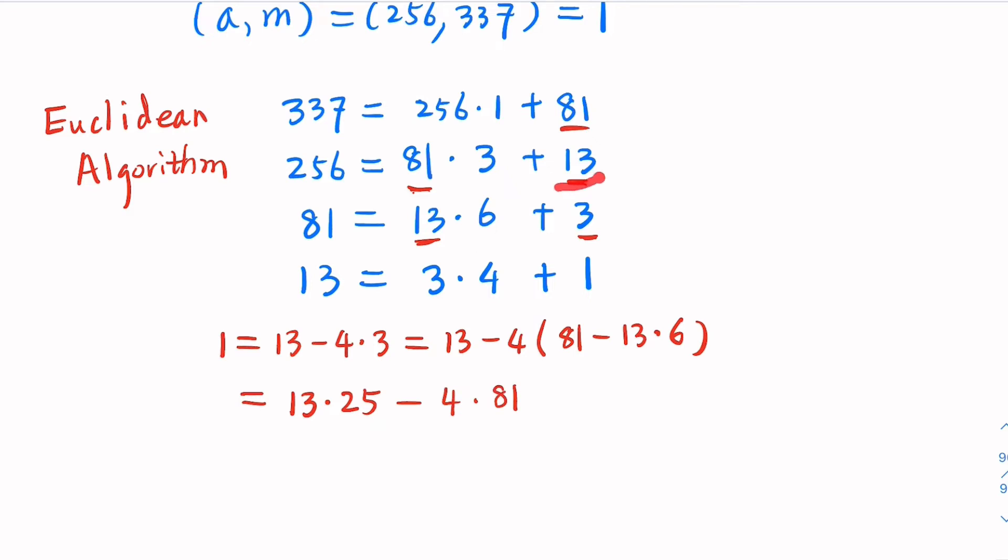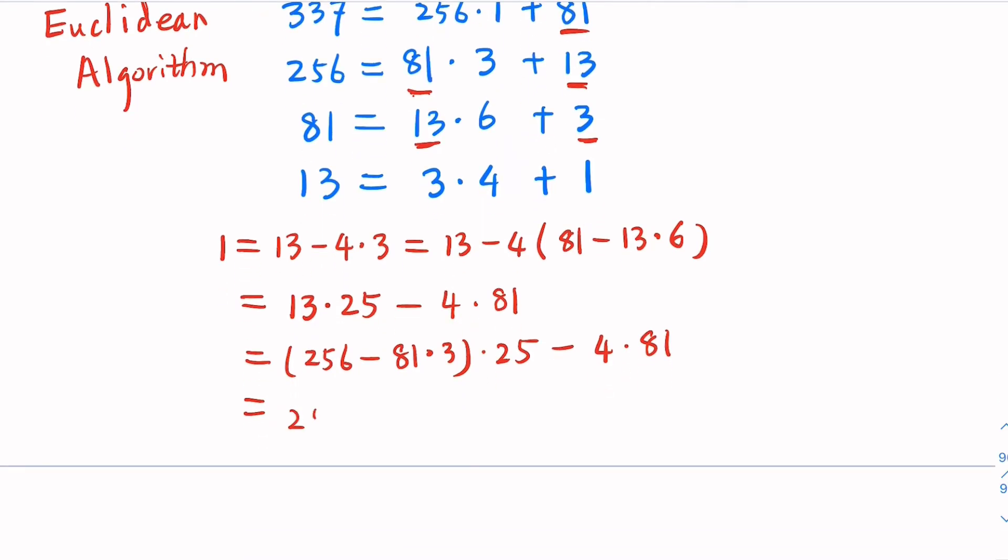Further, 13 is equal 256 minus this. So let's plug in 256 minus 81 times 3 times 25 minus 4 times 81. You have 256 times 25, and here you have 81, 3 times 25, 75, and minus 4 here, minus 79 times 81.